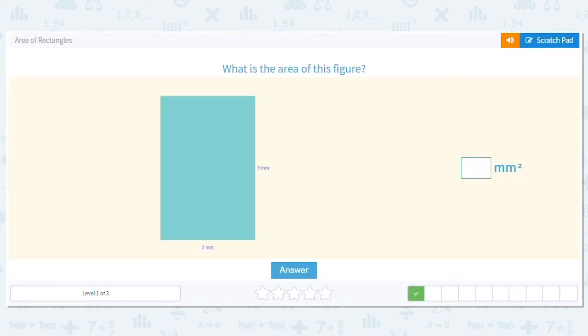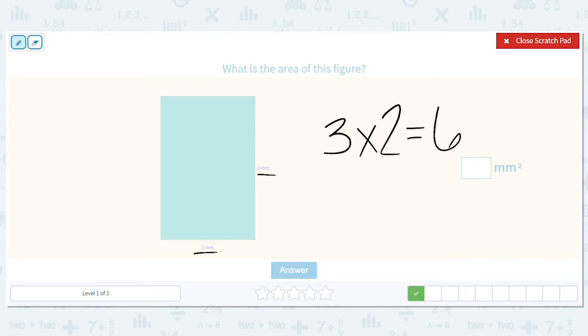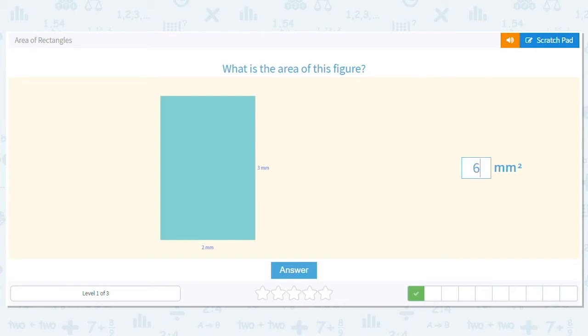Next one, same thing. What is our formula? Length times width. So I have three millimeters times two millimeters. So three times two is six. That's basically saying that this would be filled with six squares, and that's where the square comes from. Our answer is six millimeters squared.